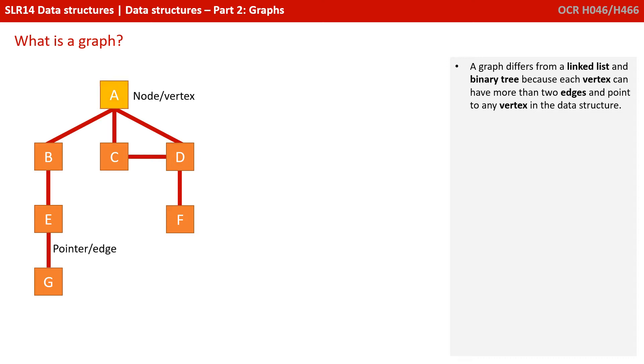A graph differs from a linked list and binary tree because each vertex can have more than two edges and point to any vertex in the data structure.